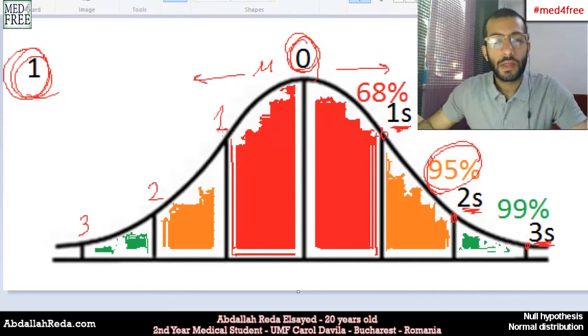Now, this area covered from one to one standard deviations, the part in red, represents around 68% of the area of the curve, or 0.68. The area covered from two to two, so that area in orange plus red represents around 95% of the whole area of the curve, or 0.95.